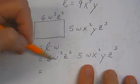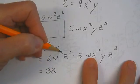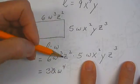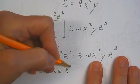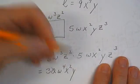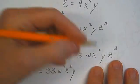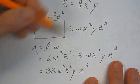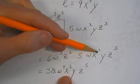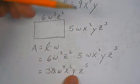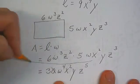6 times 5 is 30. w cubed times w is w to the 4th. x squared times x squared is x squared, y is just y, z squared times z cubed is z to the 5th. Did I leave anything out? There's my area.